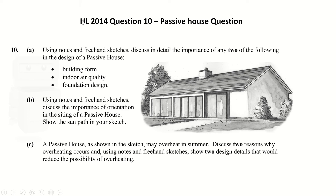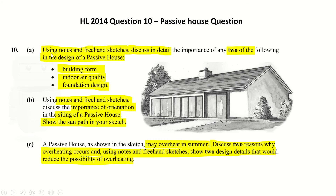We're going to take a look at the Higher Level 2014 Question 10, the passive house question. I've already underlined some important information, so we're just going to read through it now real quickly. Using notes and freehand sketches, discuss in detail the importance of any two of the following in the design of a passive house: building form, indoor air quality, and foundation design.